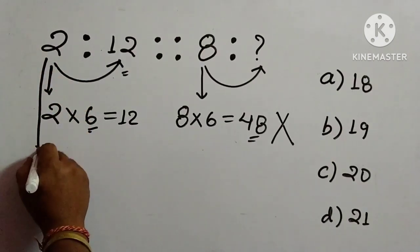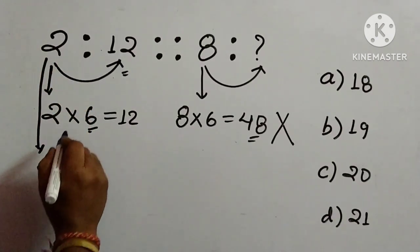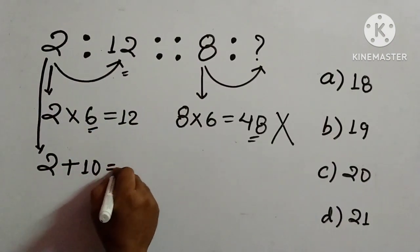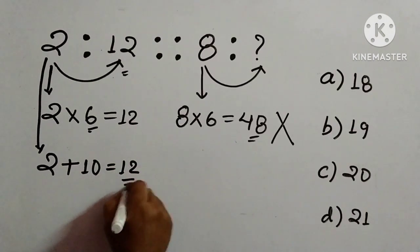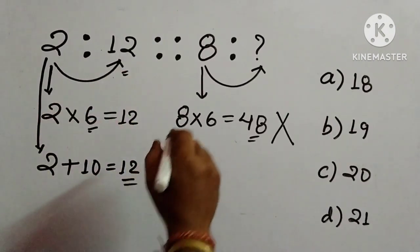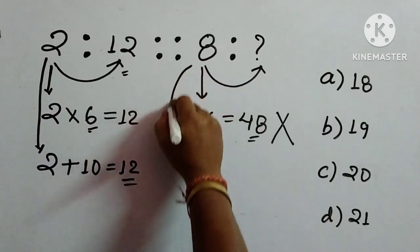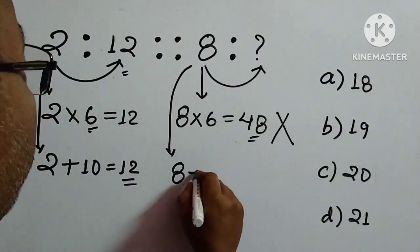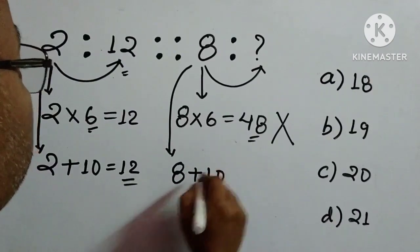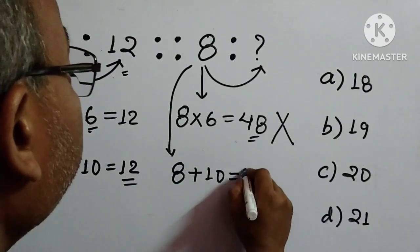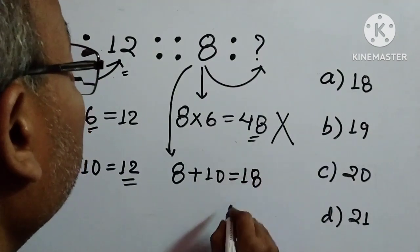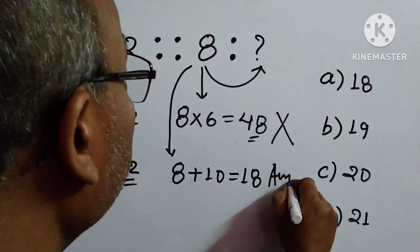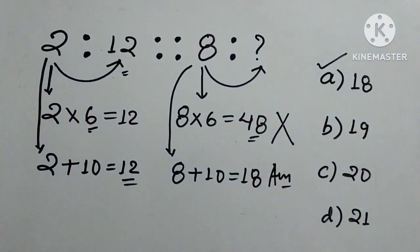We have to try a different way. Again we consider 2 — this time we add 10. So 2 plus 10 is 12, which is given. Now we check the same process on the right side: we take 8 and add 10. So 8 plus 10 is 18. Yes, 18 is given in the options. So this is the answer — option A is 18.